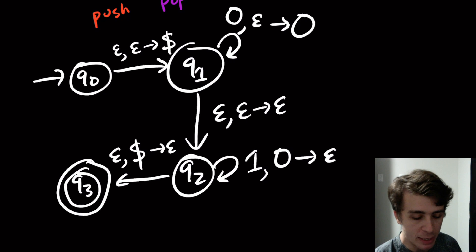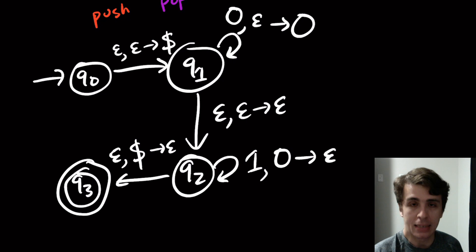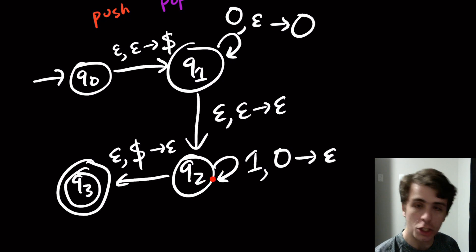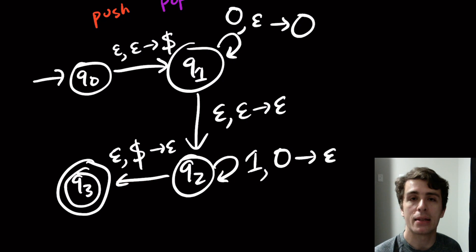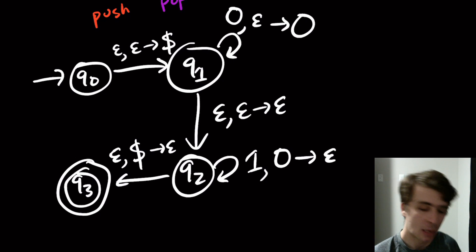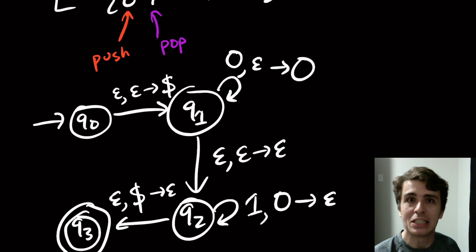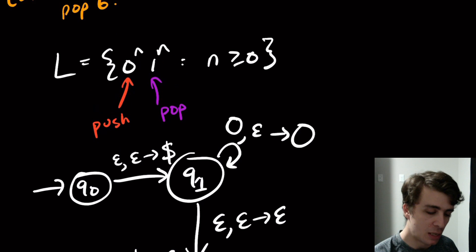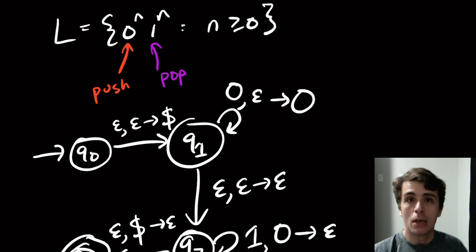What if the string contains a '10' pattern? A one can only be read in the q2 self-loop transition — it's the only transition that reads a one. The only states reachable from q2 are q2 and q3, and neither has a transition that reads a zero. So a string with a '10' in it cannot be accepted. This machine accepts exactly the strings 0^n 1^n.